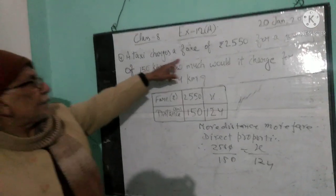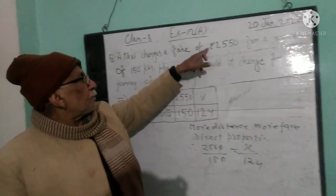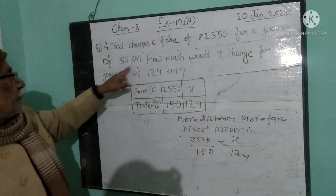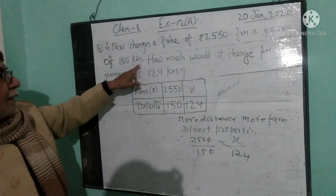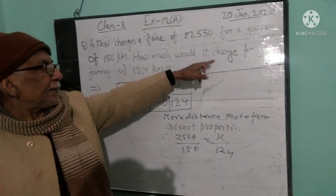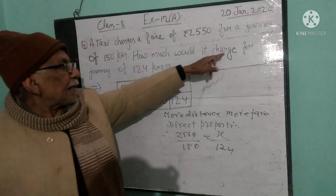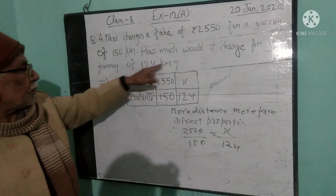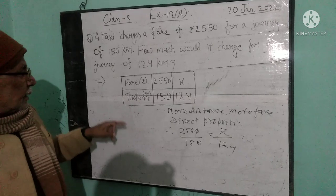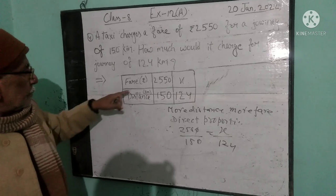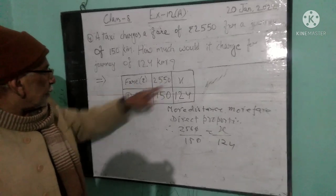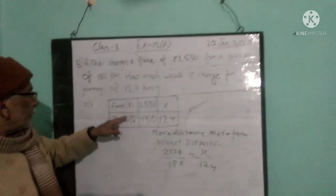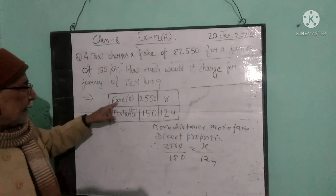A taxi charged a fare of ₹2550 for a journey of 150 km. How much will be charged for a journey of 424 km? Fare is 2550, distance is 150 km. Fare is X, distance is 424 km.